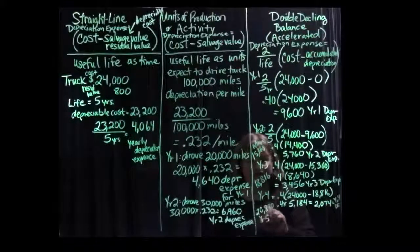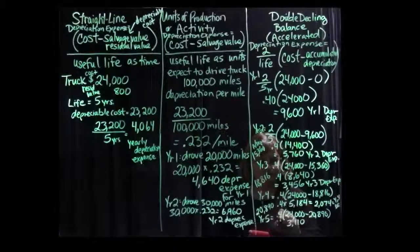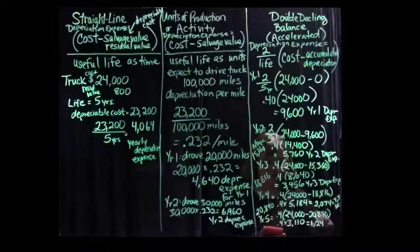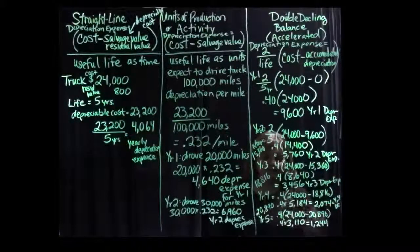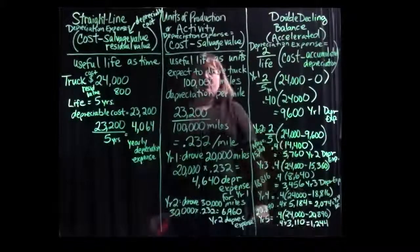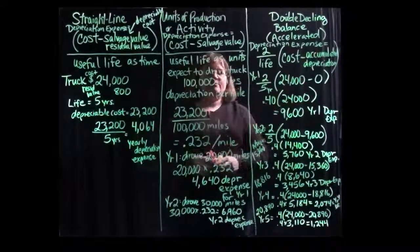For year five, the final year, we take 0.4 times $24,000 minus $20,890, giving us $3,110 times 0.4, which equals $1,244. That still won't bring us up to the full $23,200, so we'd be okay to take that amount. Alternatively, if we've determined that our residual value was accurate, we may want to go ahead and depreciate the remaining balance to reach $23,200 in year five. Hopefully this illustrates the theoretical differences between the straight line method, the units of production or activity method, and the double declining balance method of depreciation.